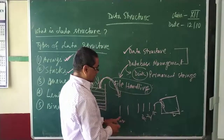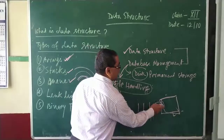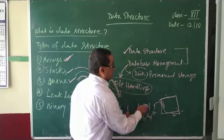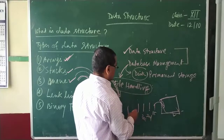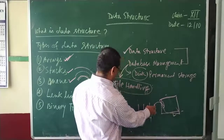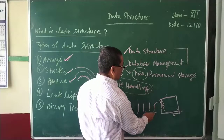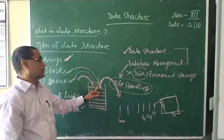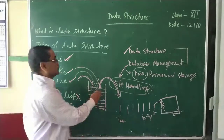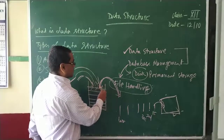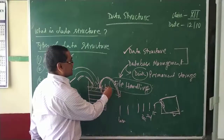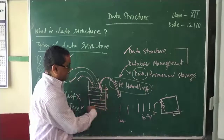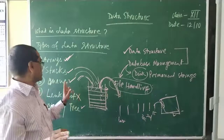In a queue there are two control points: one is the front and another one is the rear. The rear changes as people join the line, and the front changes as people leave. These two controlling variables are used in the case of queue. Whereas in the case of stack, there is only one control point — just one variable that keeps on changing its value as plates are added or removed.